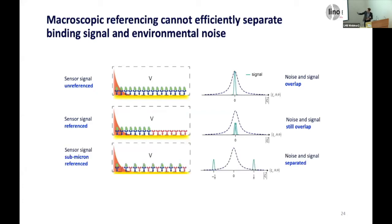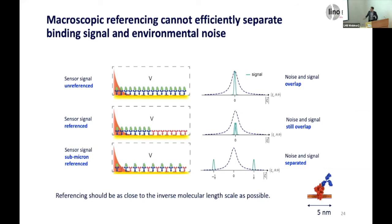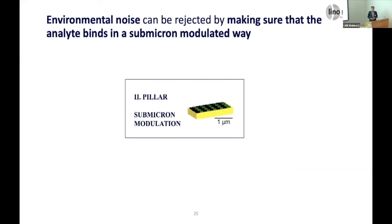A sensor without referencing is poor because your signal sits at the origin and you measure all drift. With macroscopic referencing, your spatial frequency is still close to the sensor size, so you're still near the origin and overlapping with environmental noise. However, with a distributed reference, your analyte binding frequency — your lock-in frequency — shifts to very high spatial frequencies where there's hardly any noise. By doing this, you separate the noise from the binding signal. The ideal length scale goes down to the molecular length scale: 5 to 10 nanometers for macromolecules. This is the second pillar.